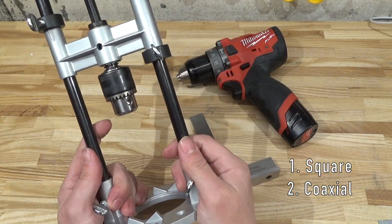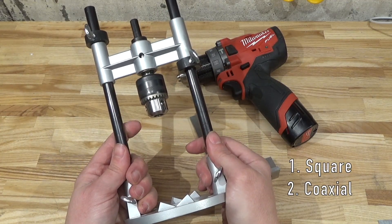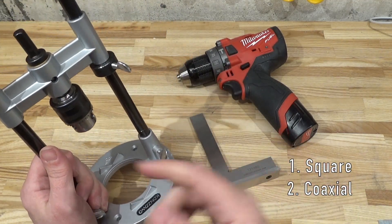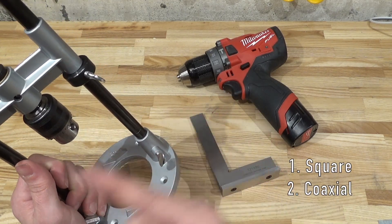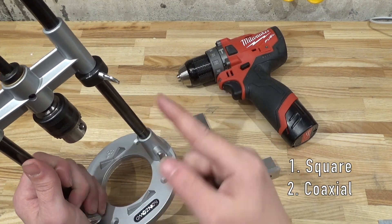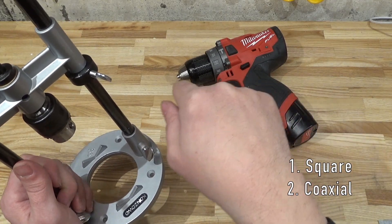Why would it not be coaxial with the quill? Walking. If you're using a twist bit—this is more a problem with metal than with wood—it's going to skitter all over the surface.